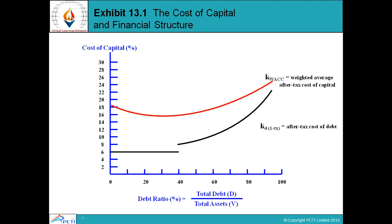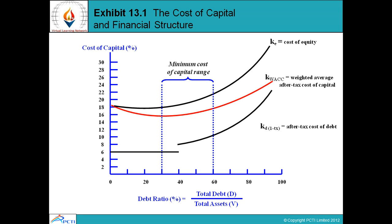KD is the cost of debt, calculated as KD×(1−T), i.e., after-tax cost of debt. KE is the cost of equity, which is always greater than KD. Therefore, KE is plotted above the WACC line. The minimum cost of capital range falls approximately between 30% to 60% debt ratio.